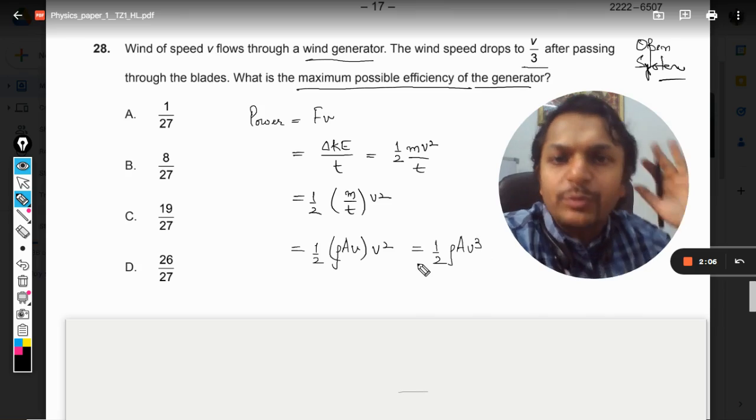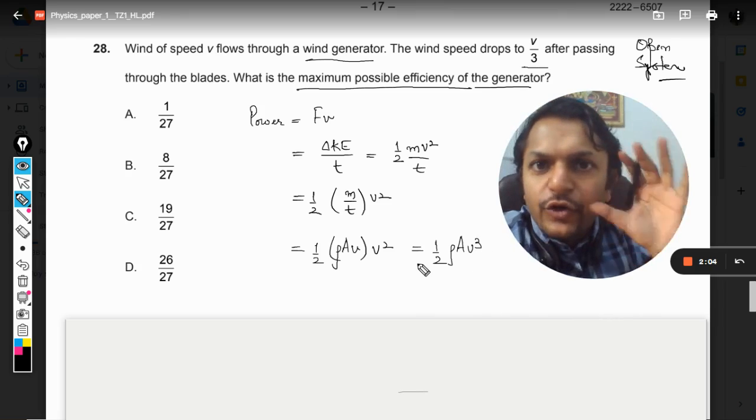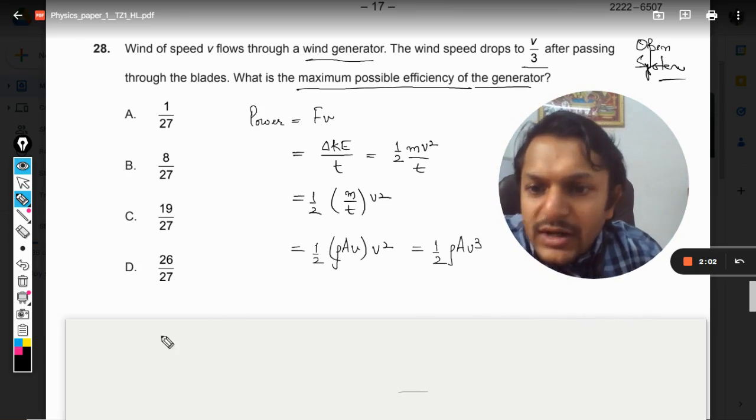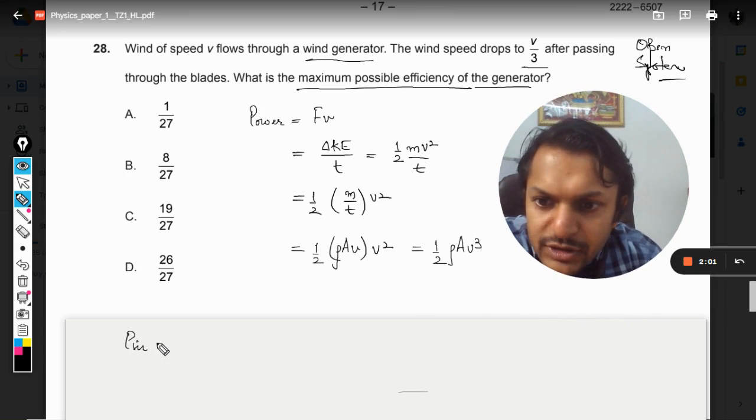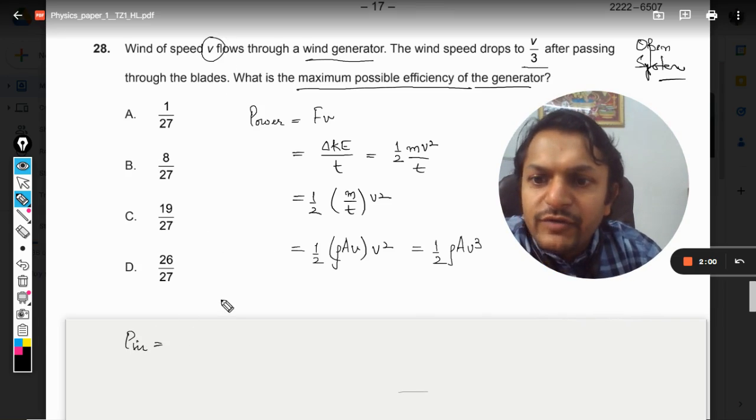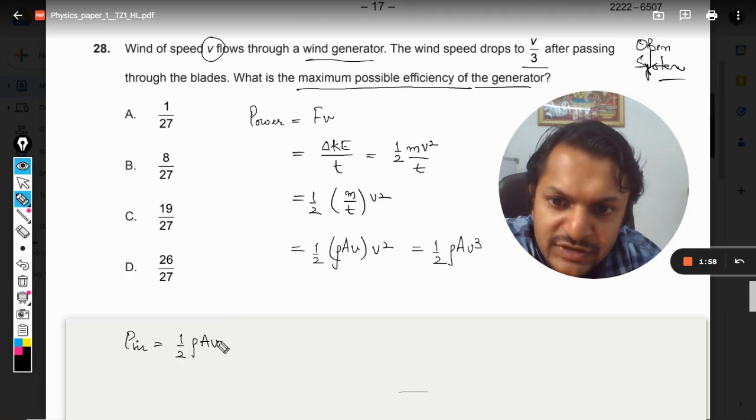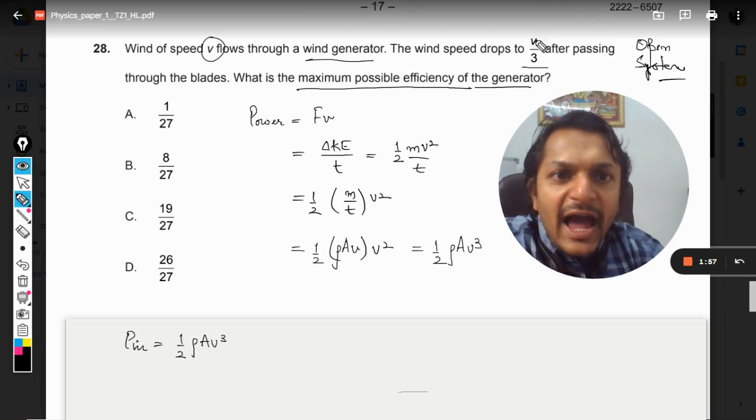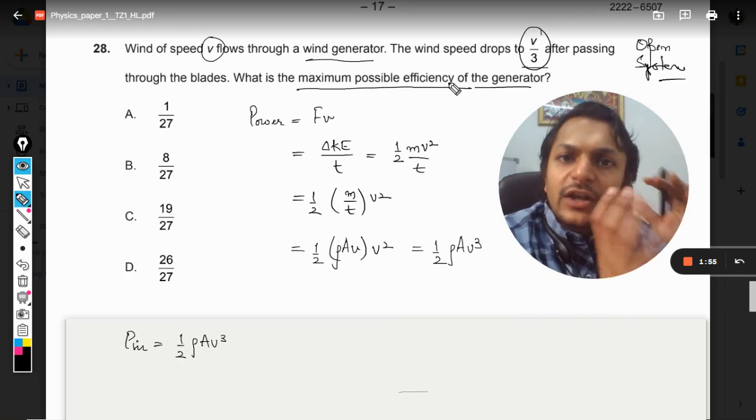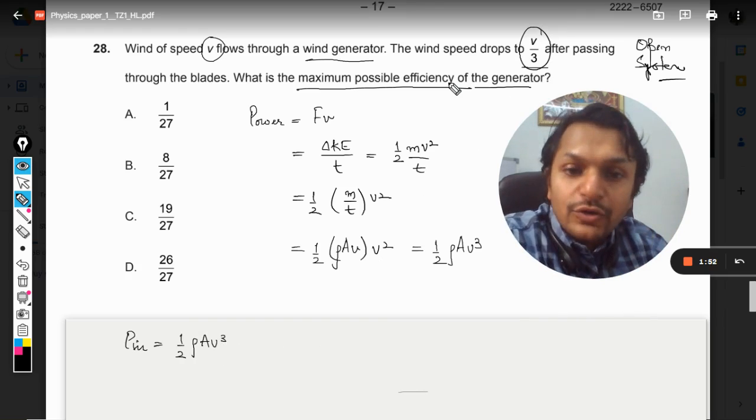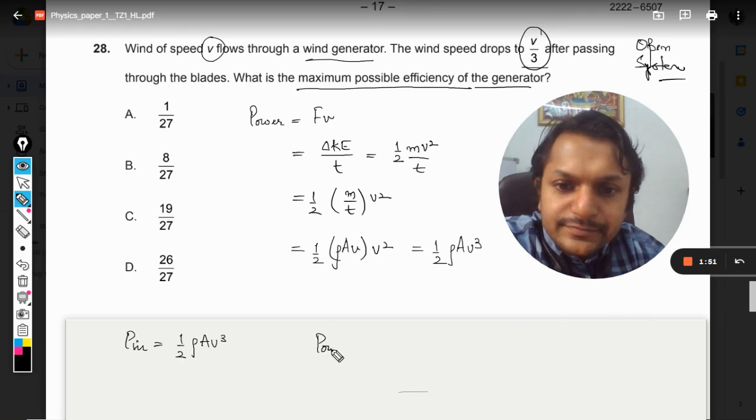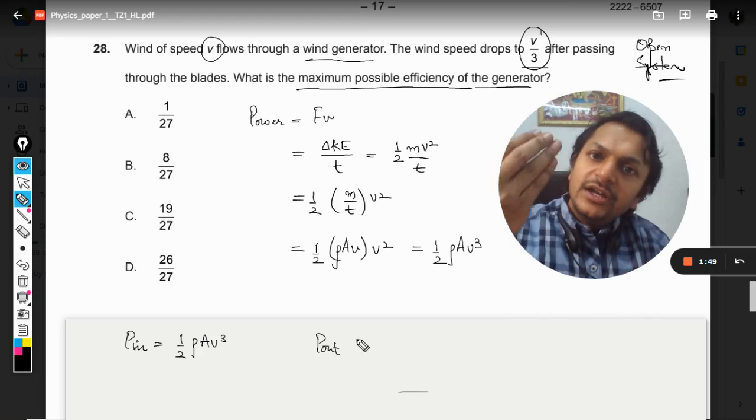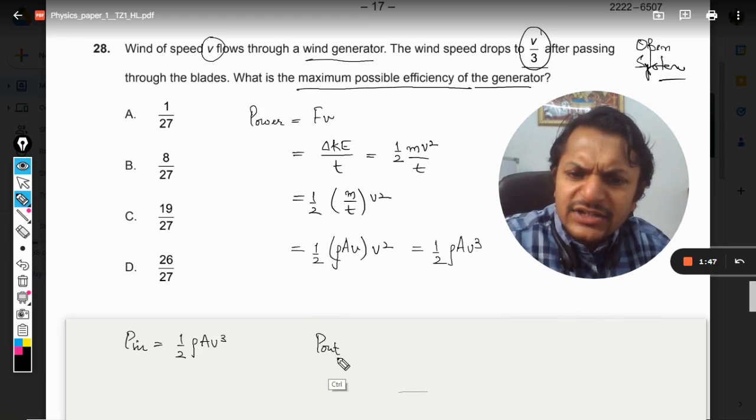In this formula, we will see the power input. The fluid was moving with v, so power input was this. And this much is the velocity of the fluid when it comes out of the turbine.